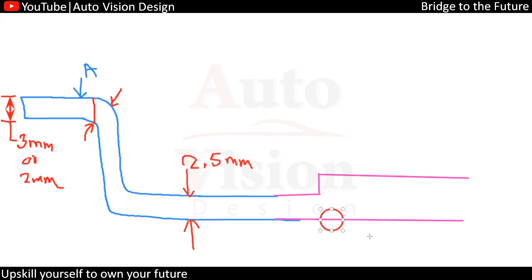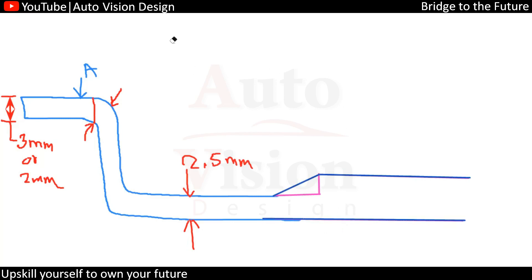In this area there will be a sink mark. What we need to do is a smooth transition. We can add a smooth transition like this, so that we can avoid any sink mark.